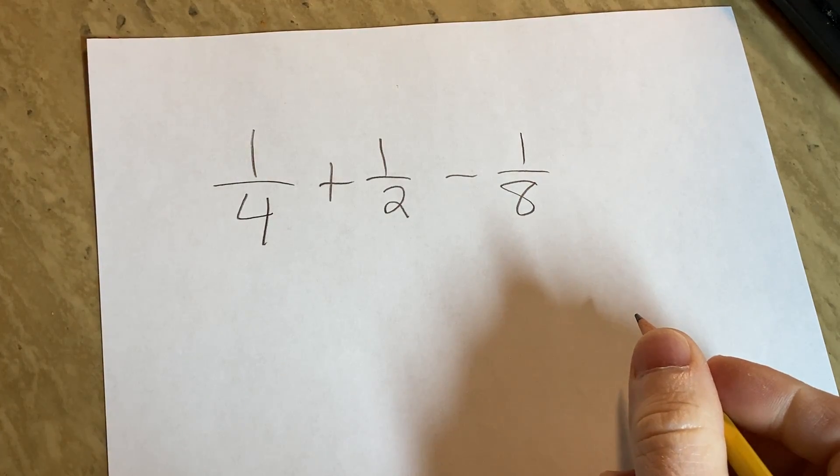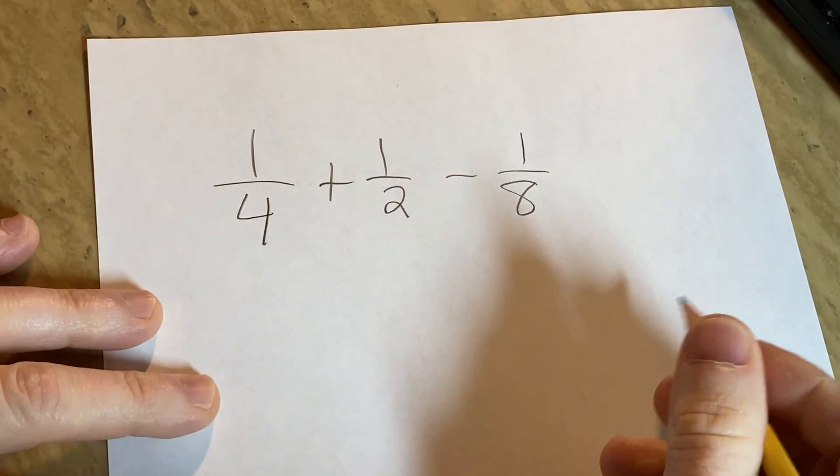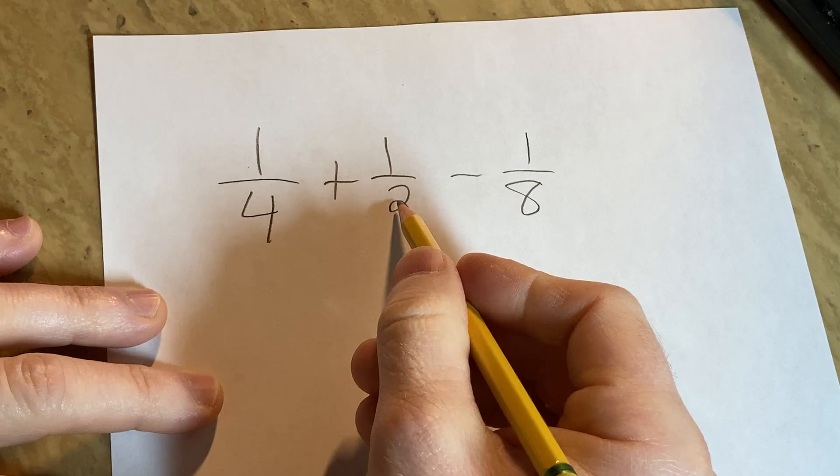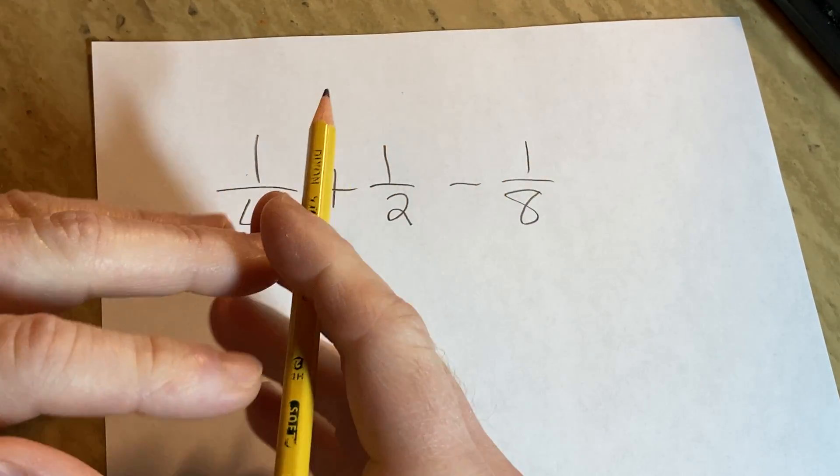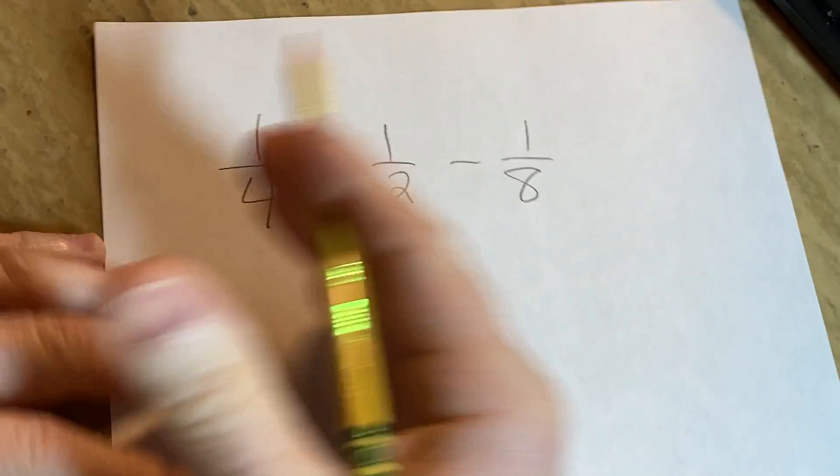We have some fraction addition and subtraction in this problem. So we have 1 fourth plus 1 half minus 1 over 8, and we have to write this as a single fraction, so perform the operations.